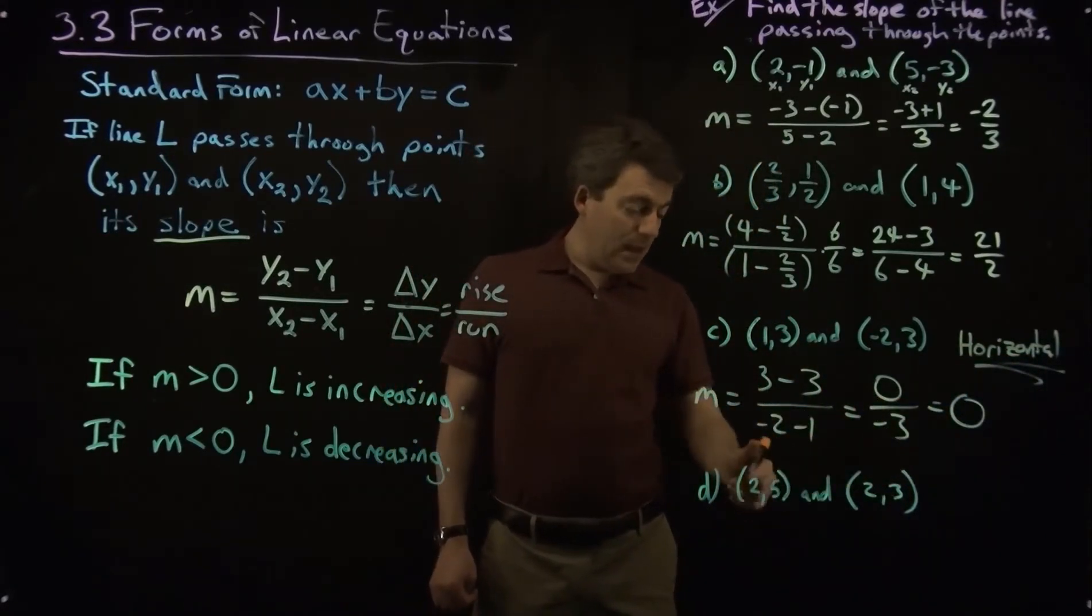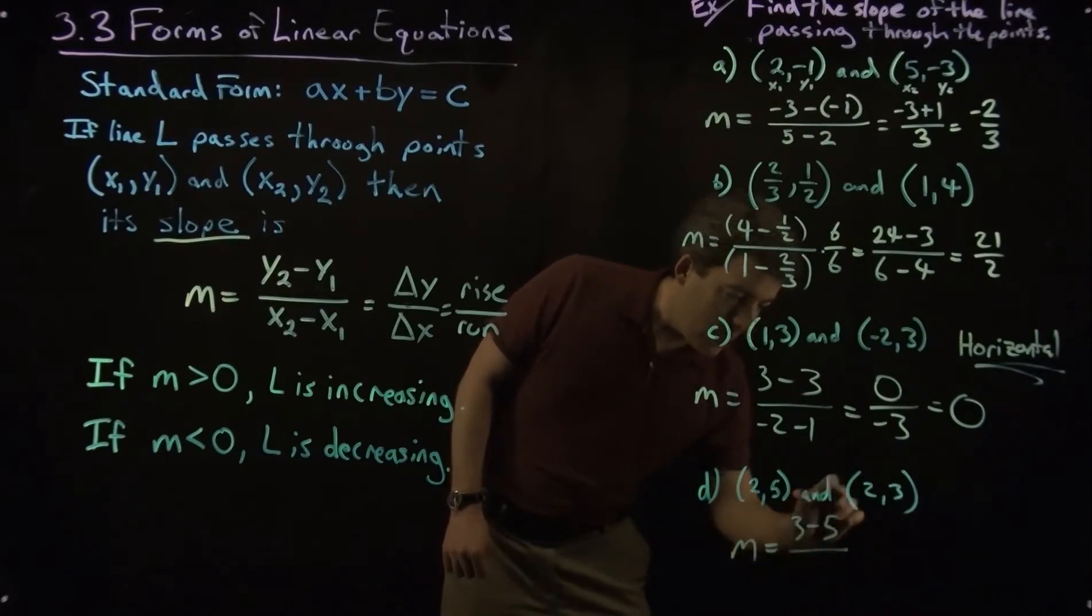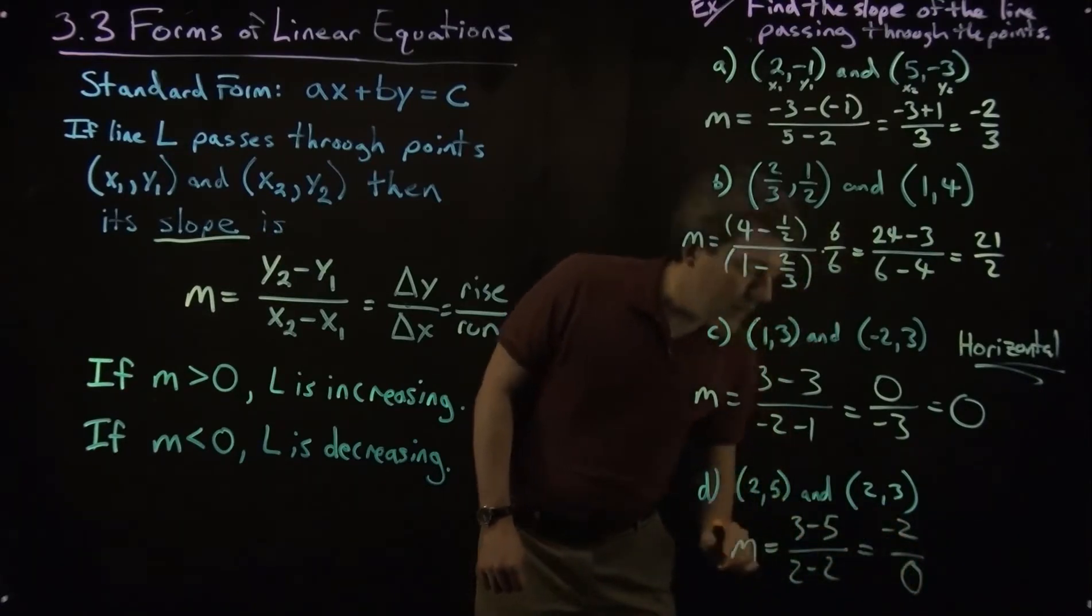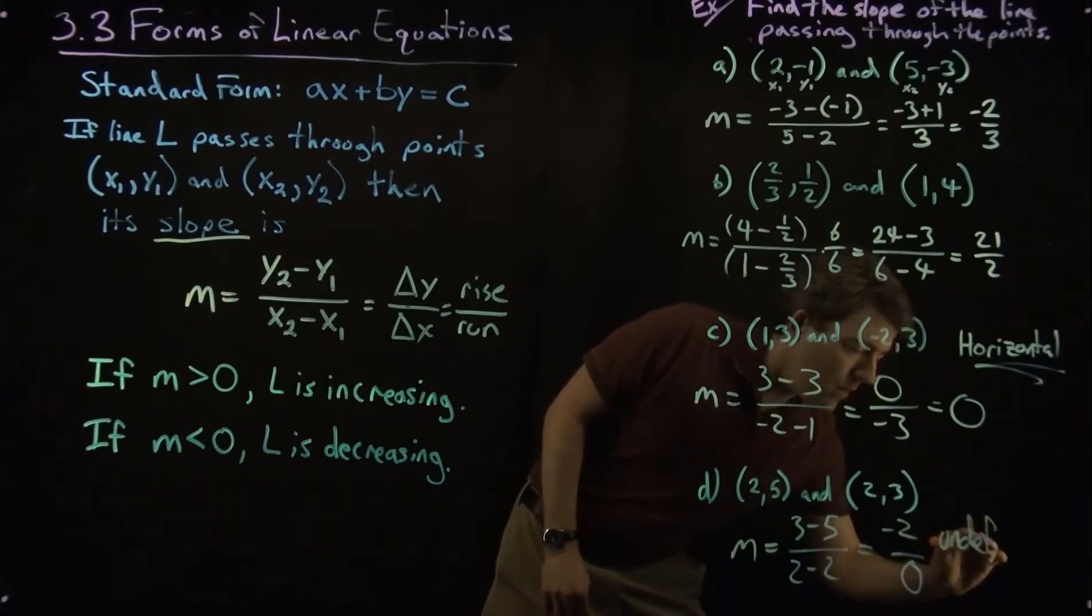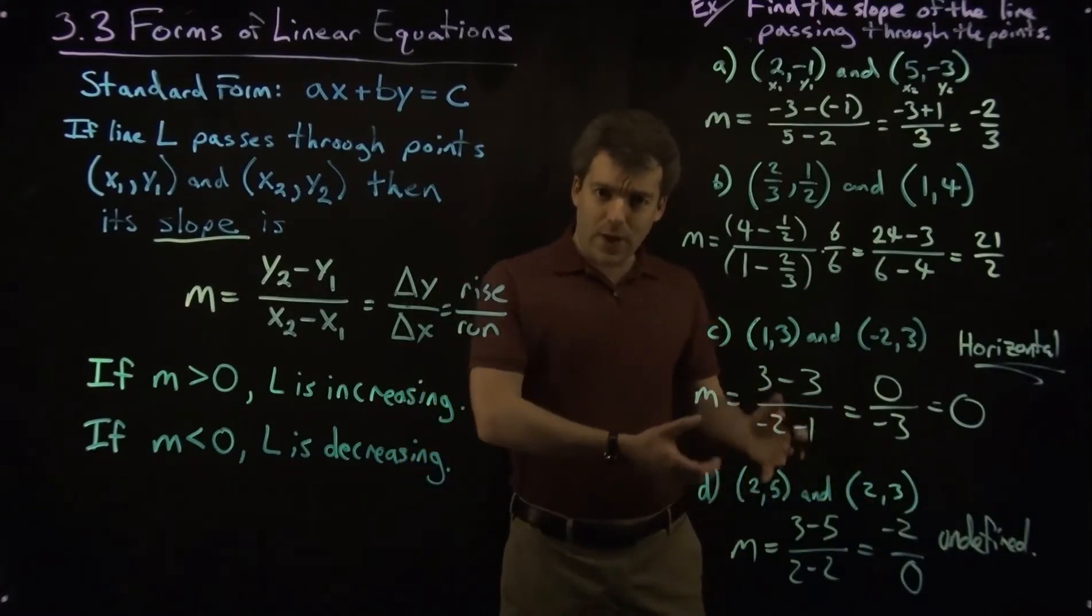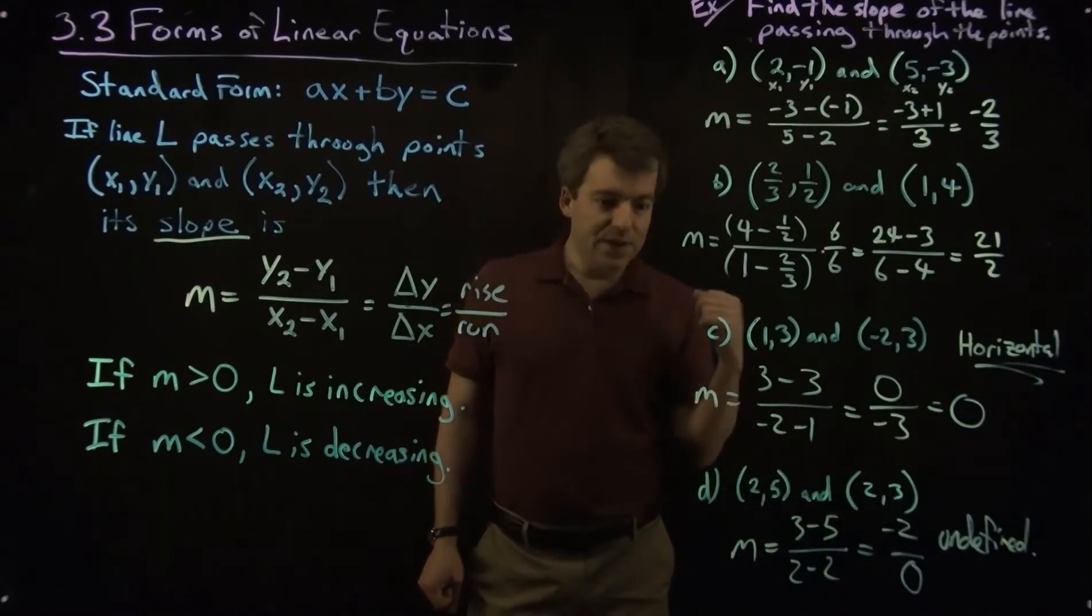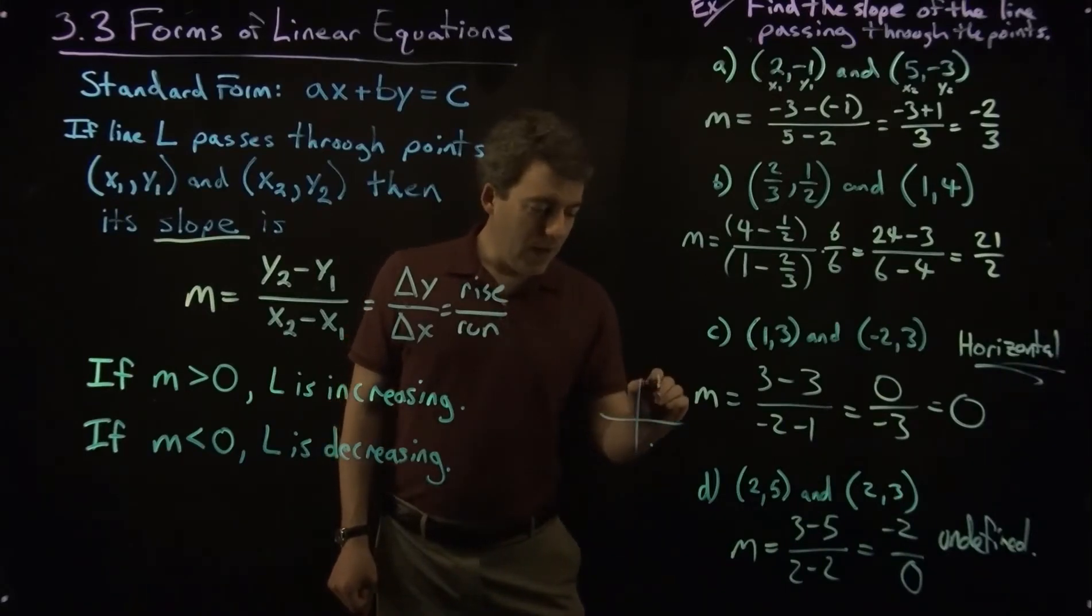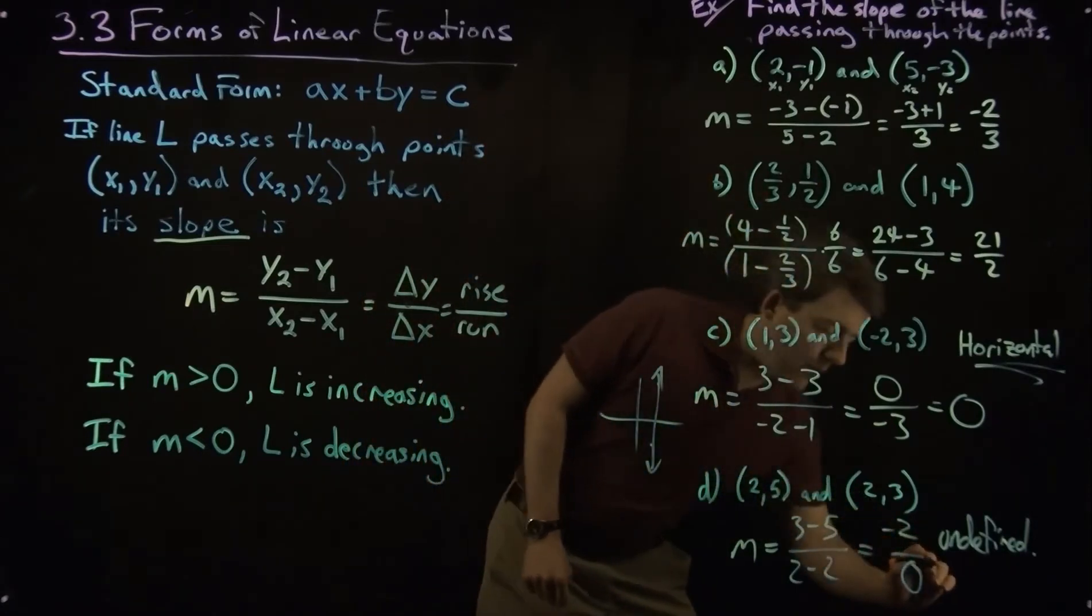All right. In our last example, we have slope is going to be 3 minus 5 over 2 minus 2. So we get negative 2 over 0. Now, we can't divide by 0, so this is undefined. When you have an undefined slope, what does that look like? What kind of line is that? Well, if we look at these two points, the x-coordinates are the same, but the y-coordinates are different. So this is going to create a vertical line. Vertical.